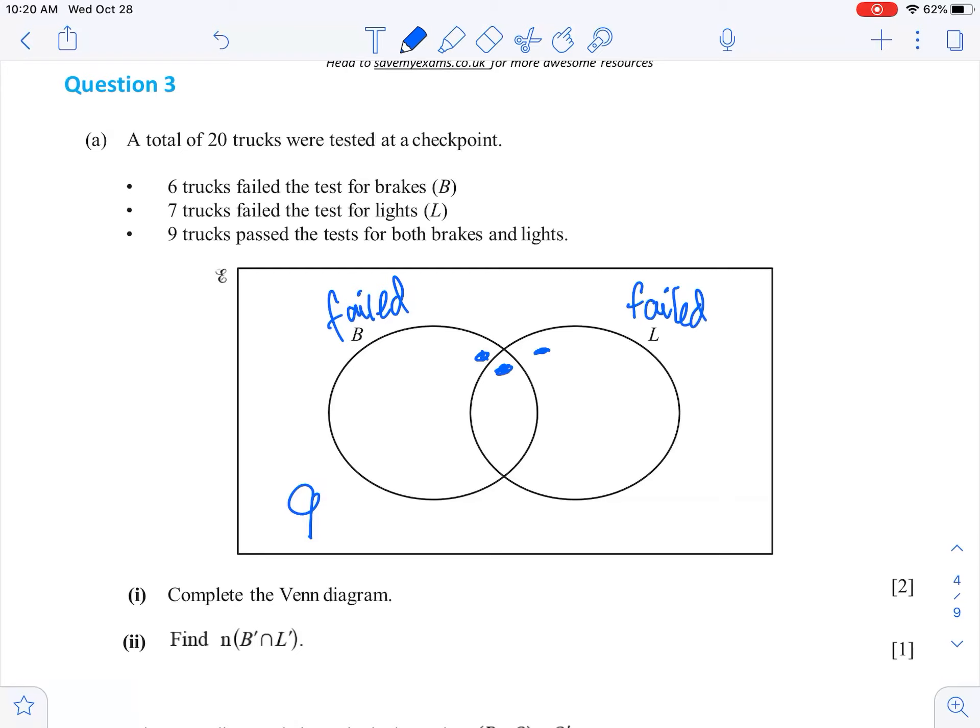Now if there's 20 in total, what I can say is that 9 plus this plus this plus this, let's call these A, B and C, sort of the sections of the Venn diagram. I know that A plus B plus C plus 9 equals 20. So that means that A, B and C is 11. There's 11 in total in these three.